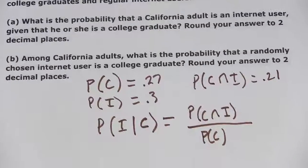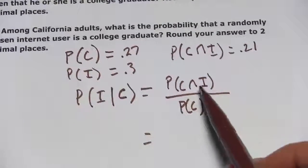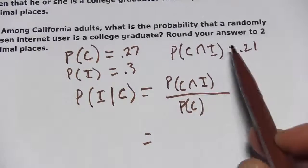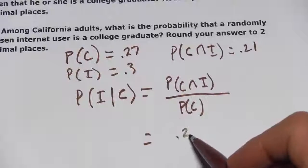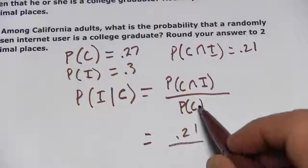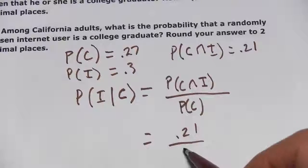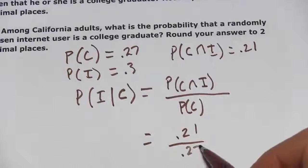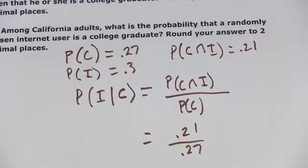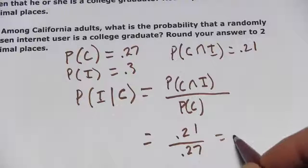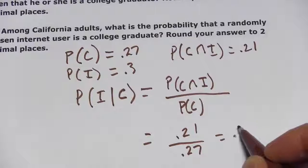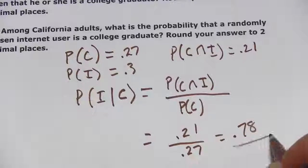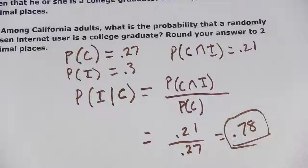So that's the formula we're going to use. We know the probability of the intersection, that's 0.21, and we know the probability of being a college graduate, that's 0.27. So we have 0.21 divided by 0.27, and that is about 0.78. So that's part A.